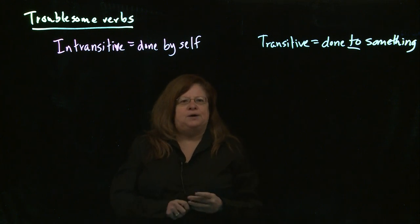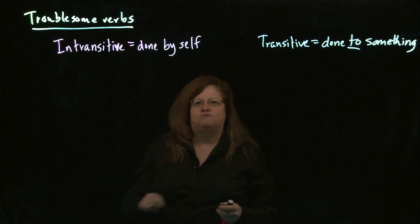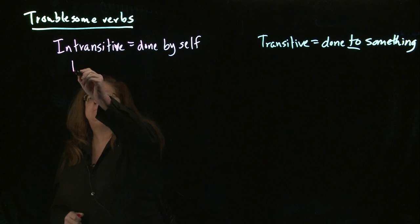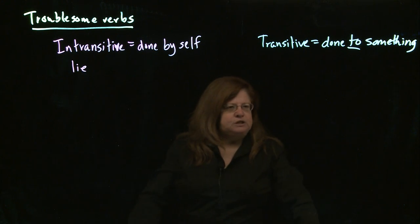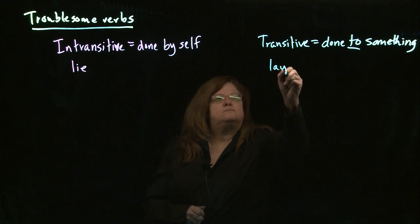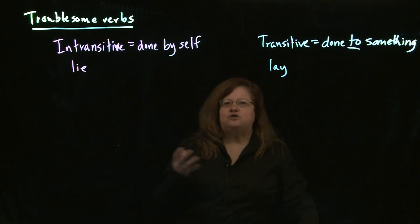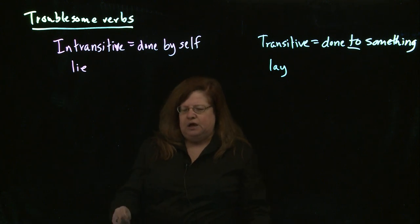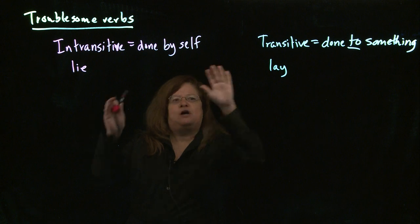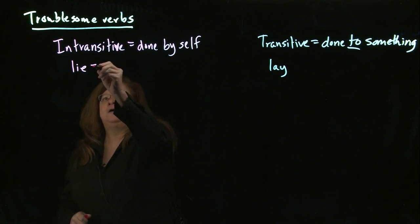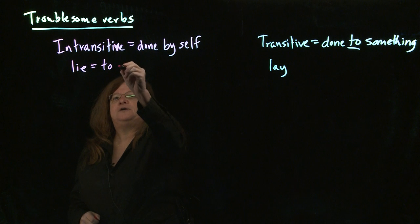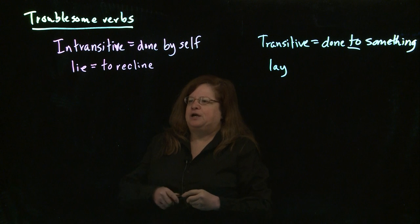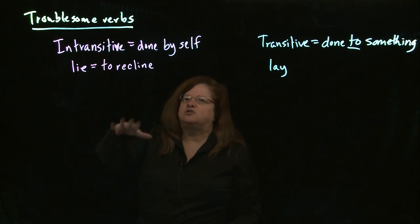The first pair of confusing verbs — and this is probably the one that confuses people more than any other — is lie versus lay. These two verbs are the ones you find misused more often than any other. The key to remember is whether it's done to yourself or done to something else. Lie means to recline, that is, to be in a horizontal position. This is not done to something.